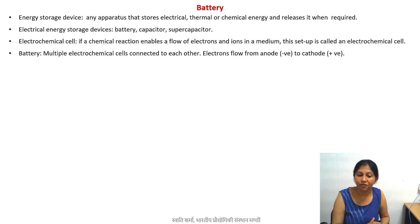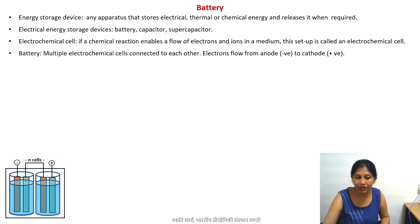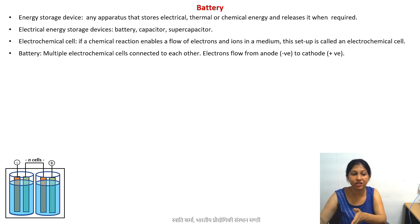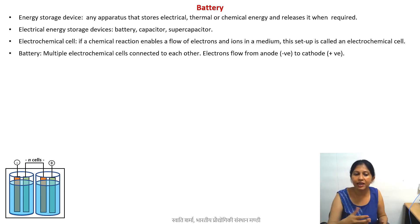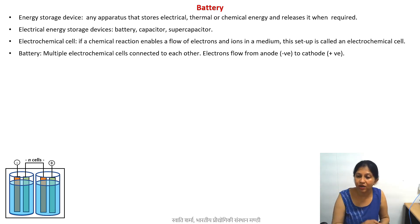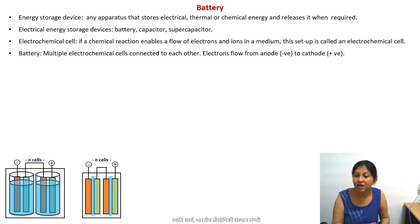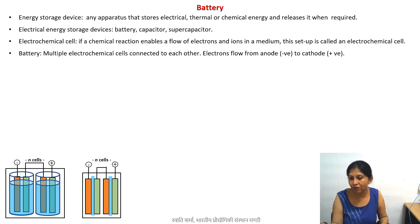If I take many electrochemical cells and connect them, like you can see in this picture, I connect N such cells and put all of them inside a box — that becomes your battery. It's as simple as that. When your electrolyte is liquid, it looks something like this. When your electrolyte is solid or semi-solid, those are solid state batteries.